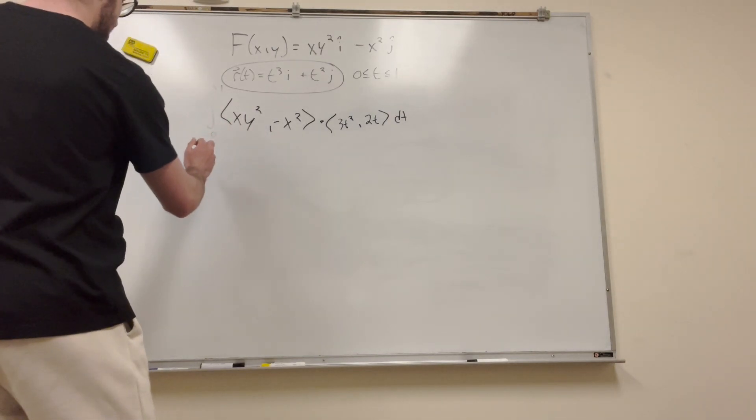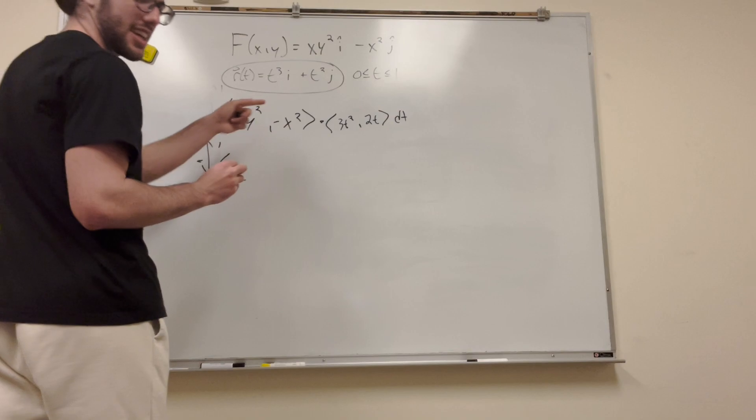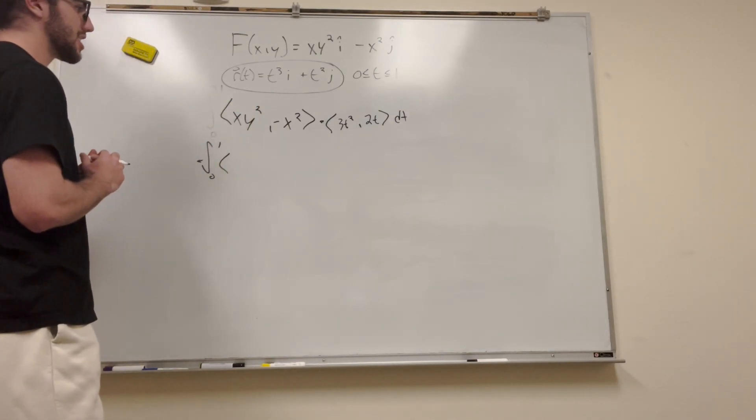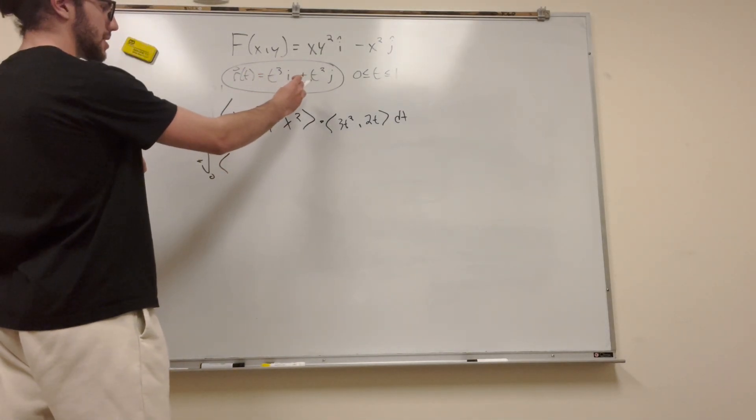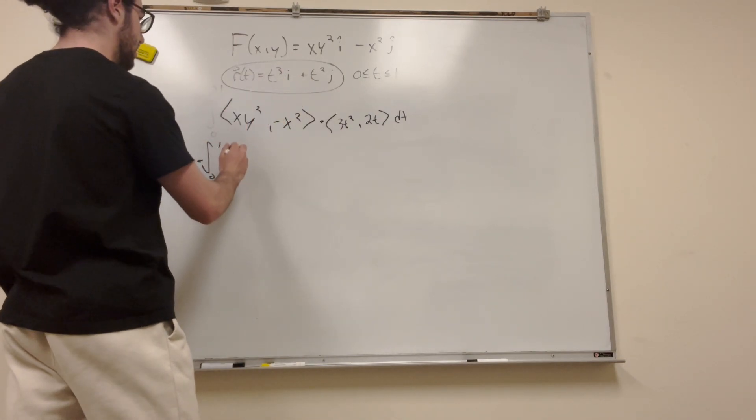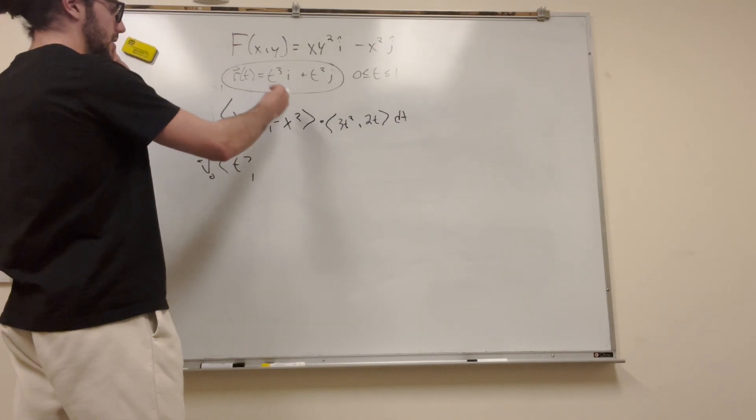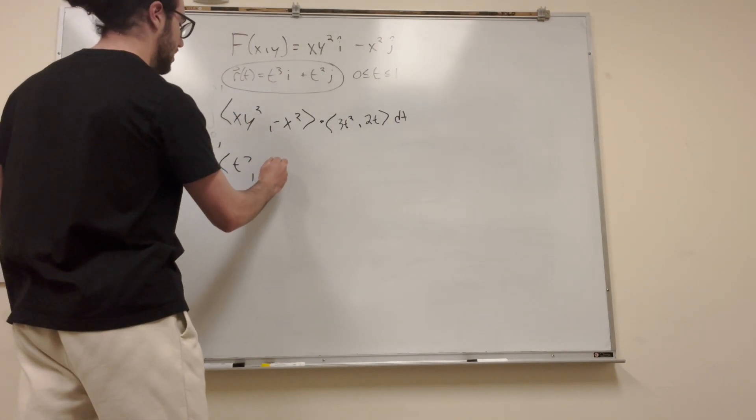So if we just go ahead and change that—also, never write it like this, because it's really confusing, and it's just not proper math. Alright, so t to the third times t squared times t squared is t to the fourth, t to the seventh, right? And then negative x squared, so that would be negative t to the sixth, right? I'm pretty sure.